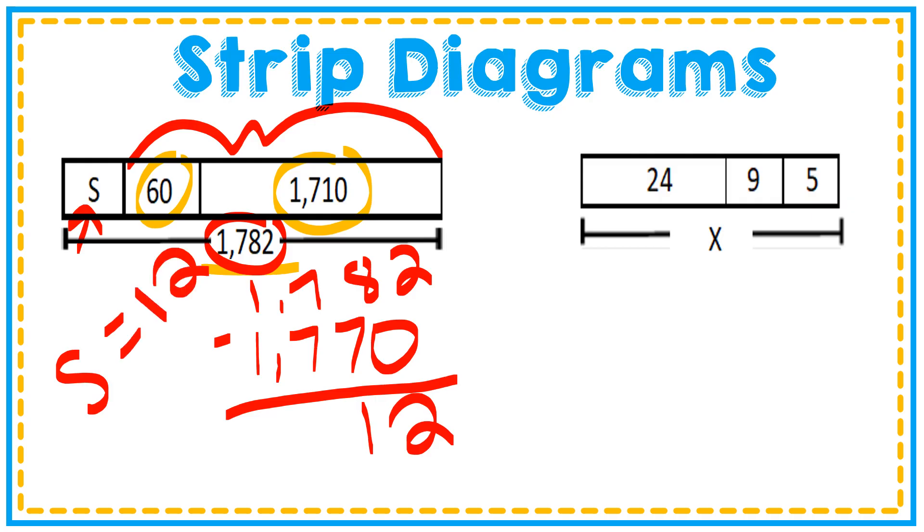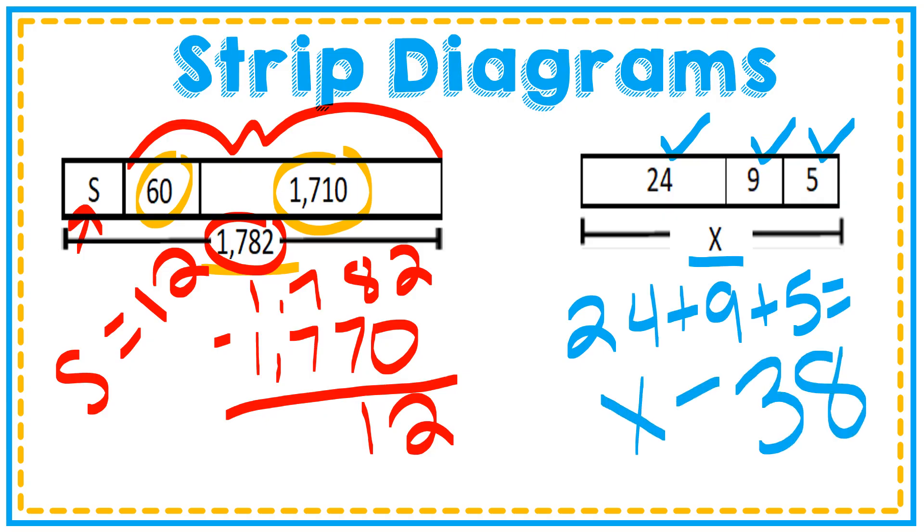Let's look at the next example. In this example, you can see that my variable is X and I'm missing the whole. So I'm going to add these three parts. When I add the three parts, I will find my variable, I'll find my whole. When I add them up, I get 38. So X equals 38.